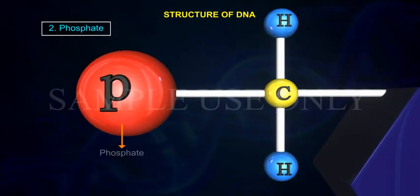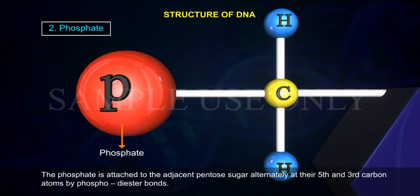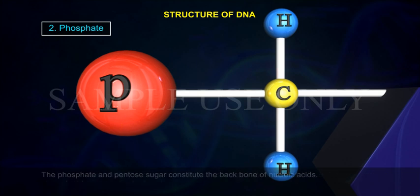2. Phosphate. The phosphate is attached to the adjacent pentose sugar alternately at their fifth and third carbon atoms by phosphodiester bonds. The phosphate and pentose sugar constitute the backbone of nucleic acids.